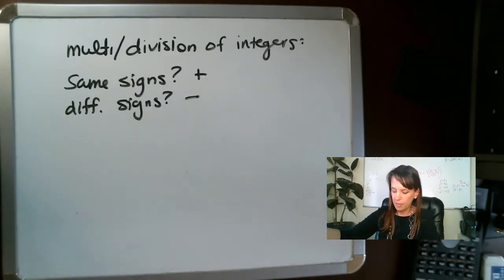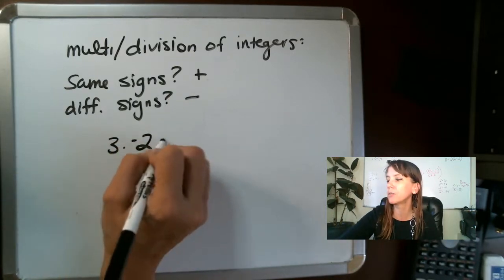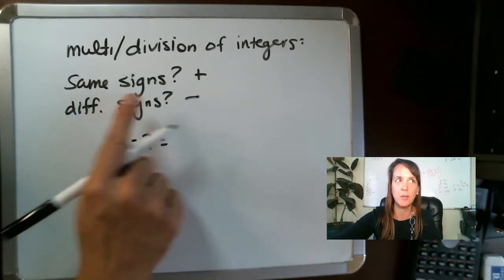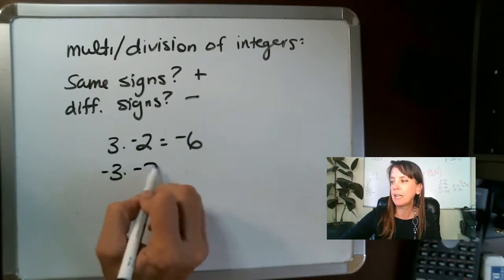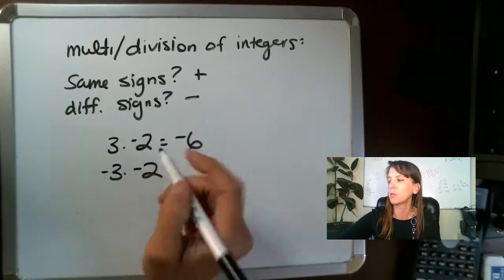So for things like three times negative two, those signs are different. For different signs, we have negative, so it's going to be negative six. Negative three times negative two, those signs are the same, so it's going to be positive.